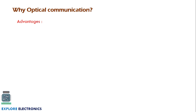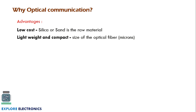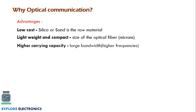Why is optical fiber communication required, since we already have wired and wireless communication? There are a few advantages. The main advantage is that it is low cost, since the glass or fiber is made up of silica or sand, which is the raw material used. It is a low-cost device, and also low weight and compact. The weight compared to coaxial cable or aluminum copper cables — the optical fiber is of very less weight.